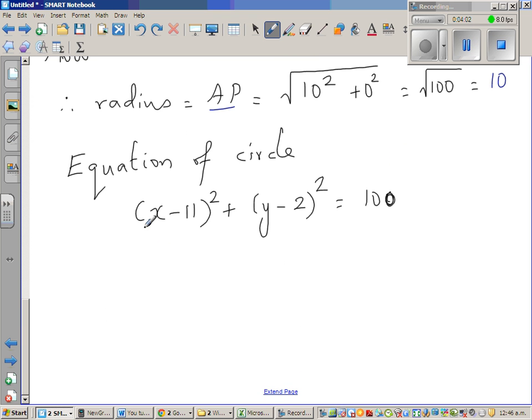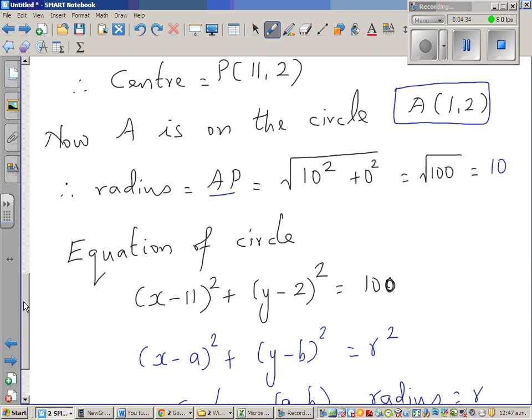Now those who have learned the equation of a circle, the equation of a circle is (x-a)² + (y-b)² = r². This is the general form of the equation of a circle with center (a,b) and radius r. Because the center is (11,2), I can write (x-11)² + (y-2)² = 100.